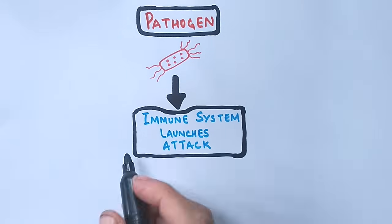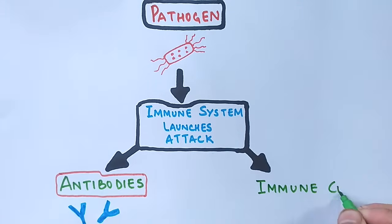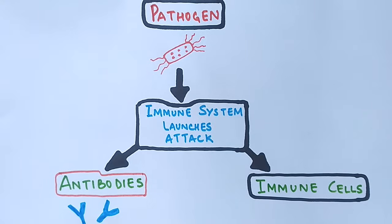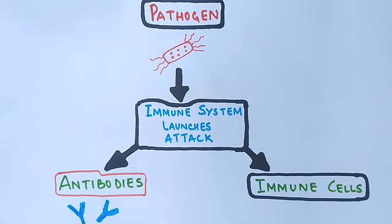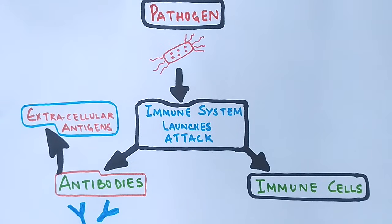Our immune system either launches an attack by making antibodies to counter the pathogen, or the cells themselves engage to eliminate the pathogen. The most important thing is that antibodies eliminate extracellular antigens or pathogens that are circulating in your circulatory system.